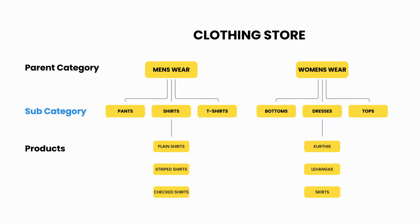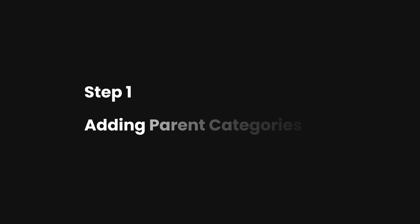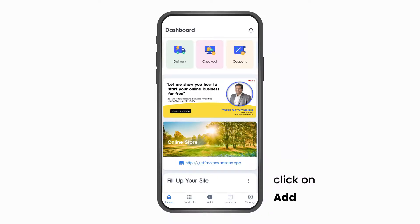The subcategories within menswear would be pants, shirts, and t-shirts. The products within the subcategory of shirts could be plain shirts, striped shirts, and check shirts. So let's learn how to add categories.